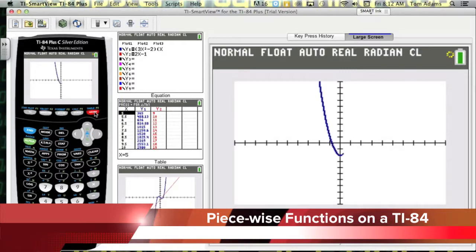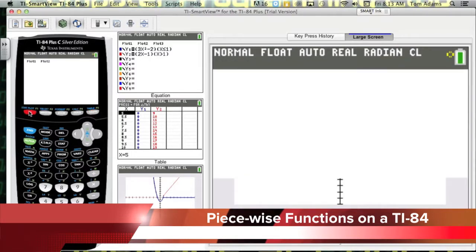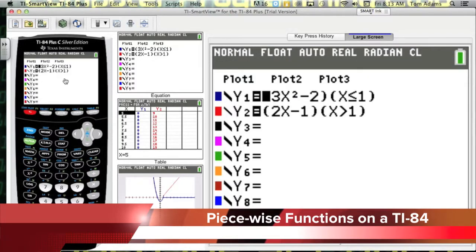Notice that where the two lines meet up, I have a straight line and then I have a straight line here. The reason, and I did this intentionally, the reason that occurs is because I graphed these as two separate functions.